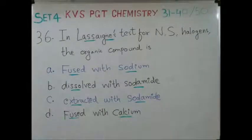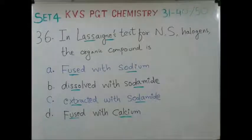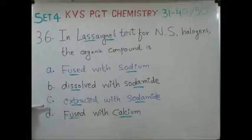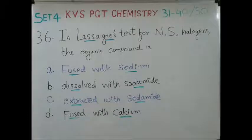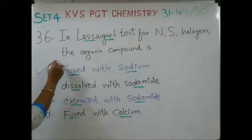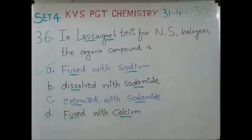The next question: in Lassaigne's test for nitrogen, sulphur, and halogens, the organic compound is — option A: fused with sodium, B: dissolved with sodamide, C: extracted with sodamide, D: fused with calcium. When you prepare the Lassaigne's extract, the organic compound is fused with sodium. The correct answer is A.